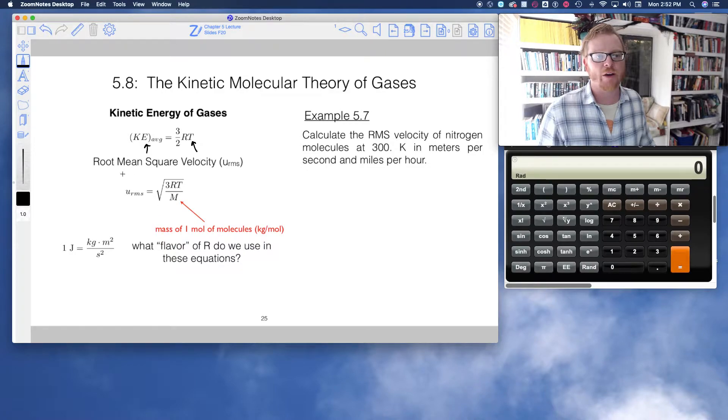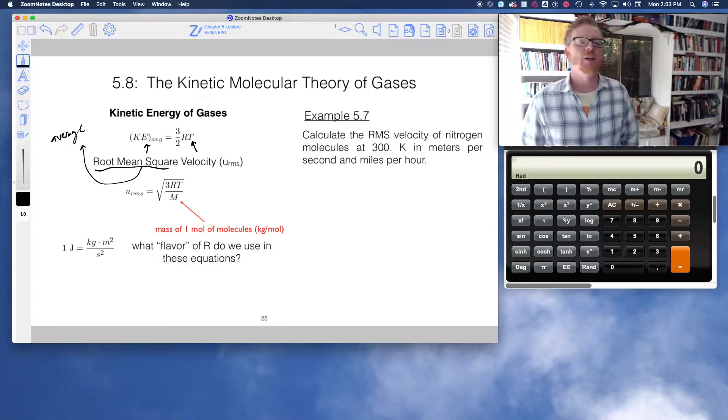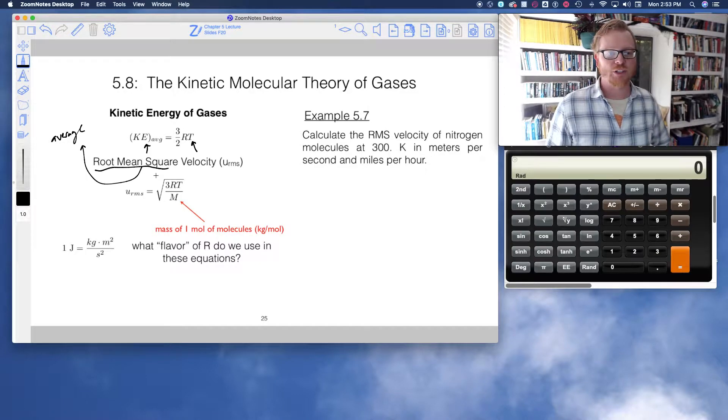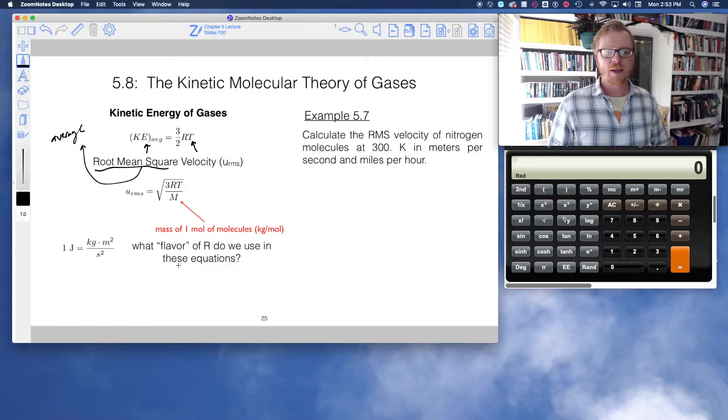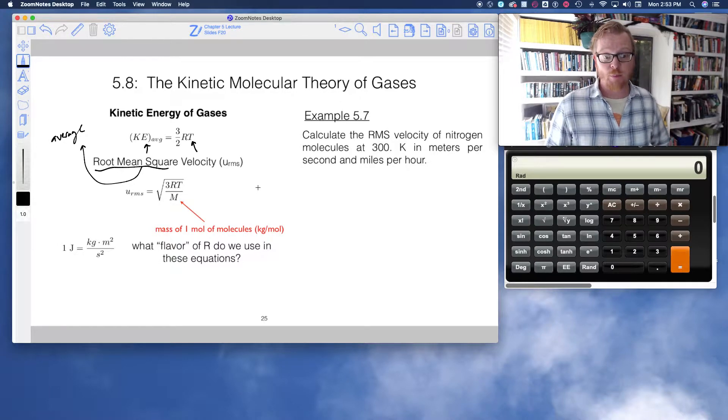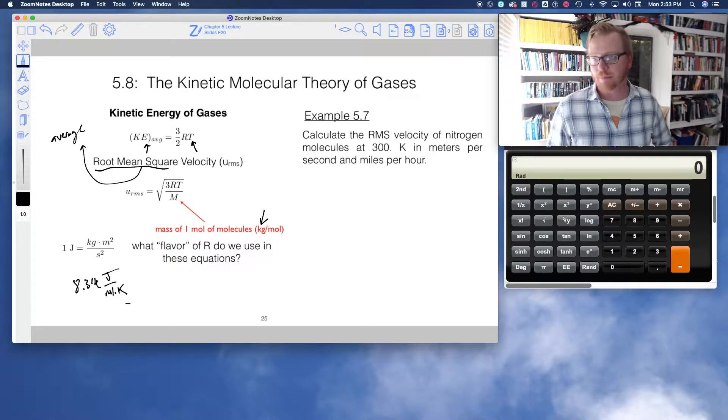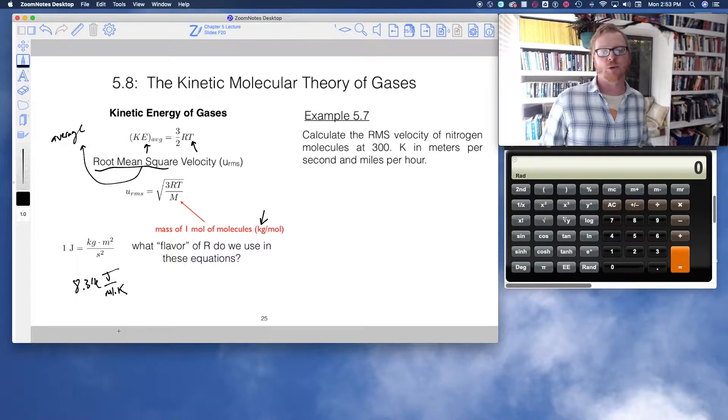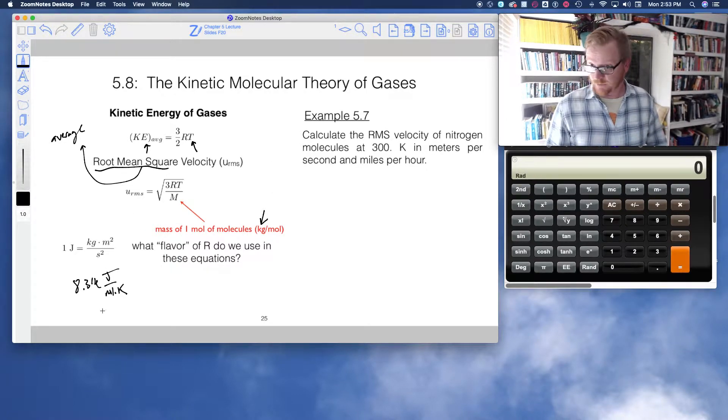Also we can calculate the root mean square, so root mean square is just a fancy way of doing an average. It is a type of average. So average velocity or root mean square velocity is given by the equation square root of 3RT over m. But now to use these equations, the units here are a little bit tricky. The molar mass has to be in kilograms per mole and the flavor of R we use has to be 8.314 joule per mole K.